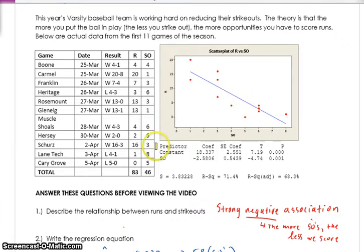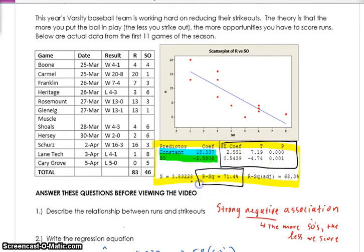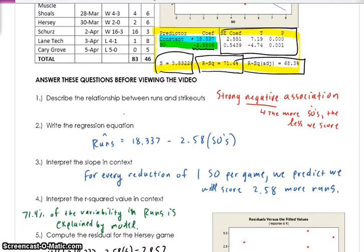Okay, writing the regression equation. This information right here was spit out by Minitab. And if you remember, there are two pieces that we need to find a regression equation. We need the constant, or the y-intercept, and we need the slope. All this other stuff, for now, in fact, until today, we don't care about. But after we complete this video, we will care about it, and we'll know what it means. But these are the numbers we're going to use right now. The y-intercept is the constant, and the slope is the other number. So here's our regression equation. The number of runs is 18.337 minus 2.58 times the number of strikeouts.